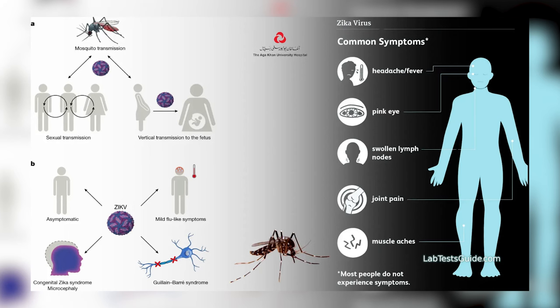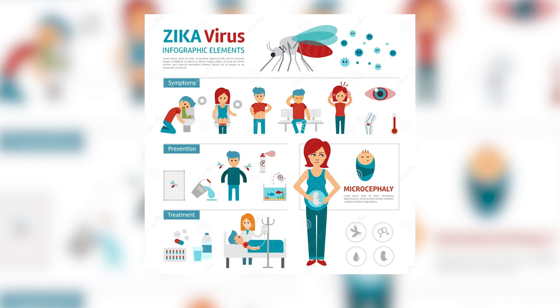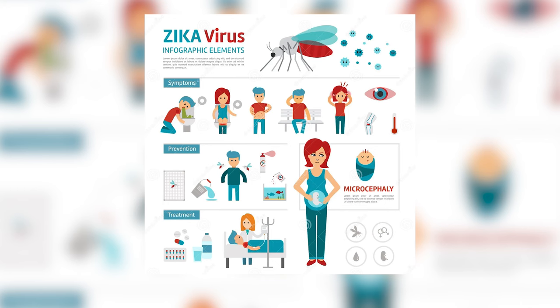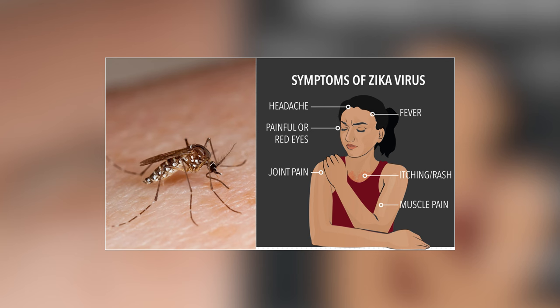The Zika virus typically has an incubation period of two to 14 days. It can present with two or more of the following: fever, maculopapular itchy rash, joint pains notably in the small joints of the hands and feet, and conjunctivitis, which is inflammation of the transparent membrane that lines the eyeball and eyelid.